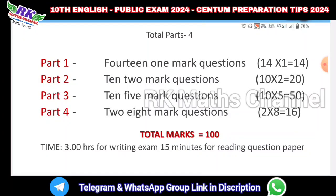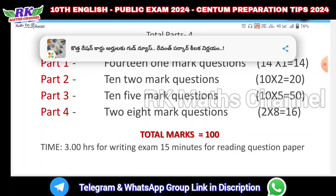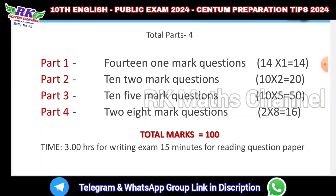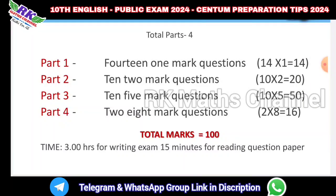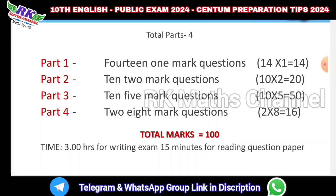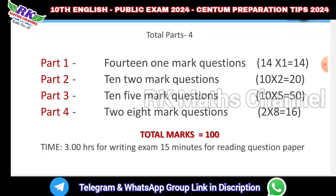Part 3 is 10 questions of 5 marks each, totaling 50 marks. And the last part, Part 4, is 2 questions of 8 marks each, totaling 16 marks. Total: 100 marks. We have a 3-hour written exam and 15 minutes for reading questions.